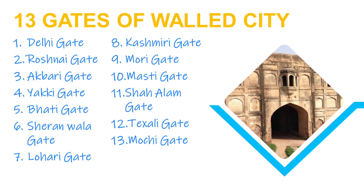Now we will study about the 13 gates of the Walled City of Lahore. The old Lahore was surrounded by 13 gates, with the whole city inside them. The gates are: number one, Delhi Gate; number two, Roshnai Gate; number three, Akbari Gate; number four, Yaki Gate; number five, Bhati Gate; number six, Shiranwala Gate; number seven, Lahori Gate; number eight, Kashmiri Gate; number nine, Mori Gate; number ten, Masri Gate; number eleven, Shah Alam Gate; number twelve, Texali Gate; and number thirteen, Mochi Gate.